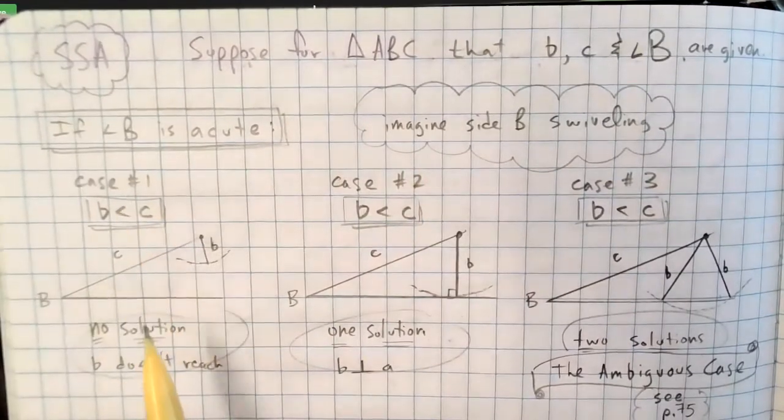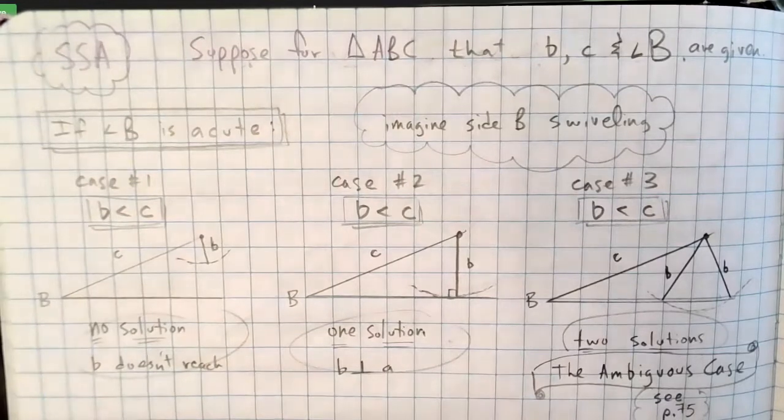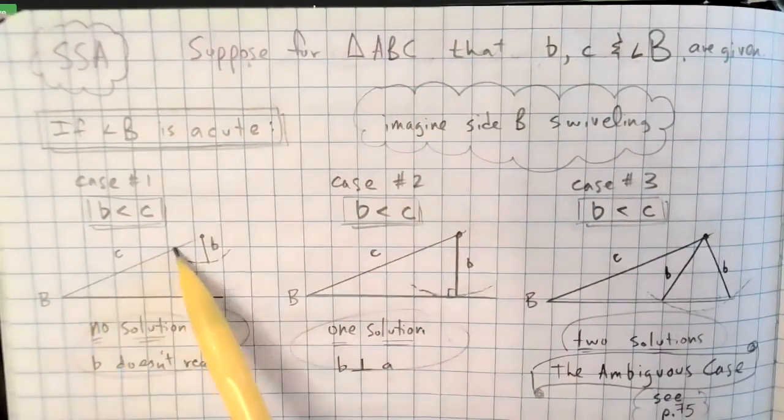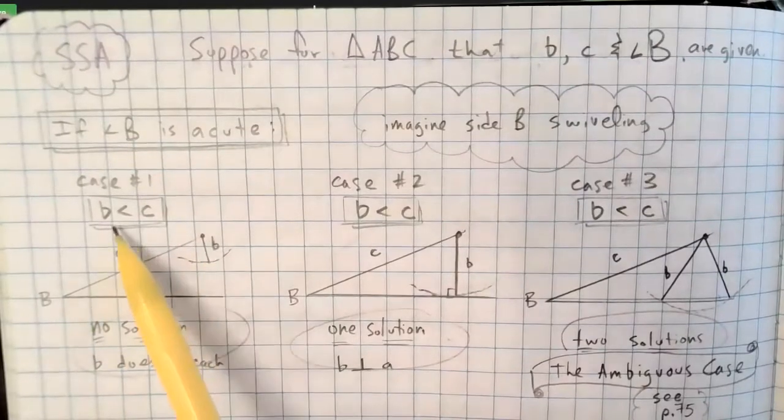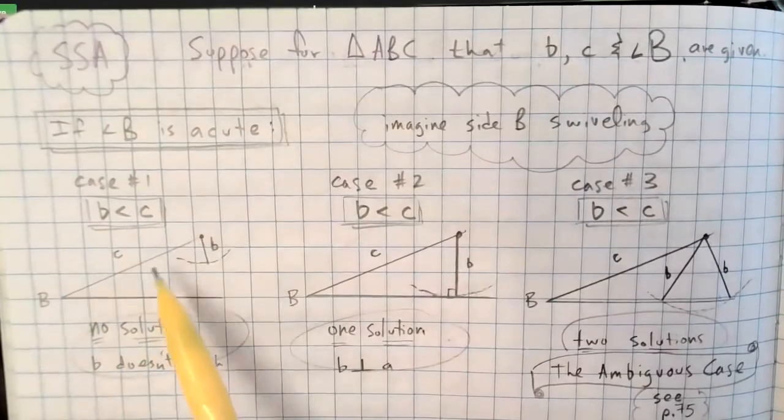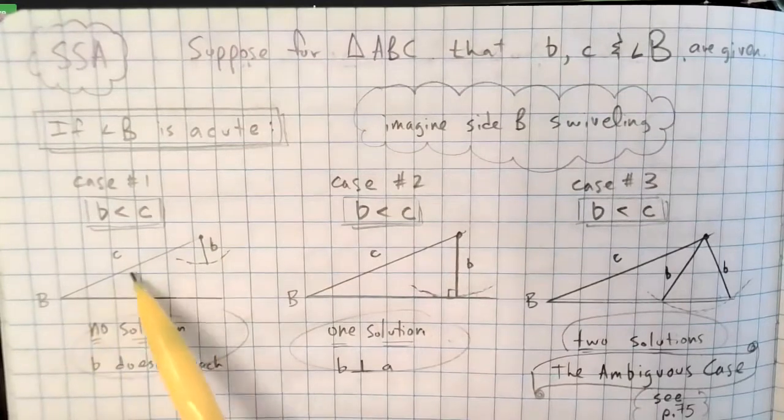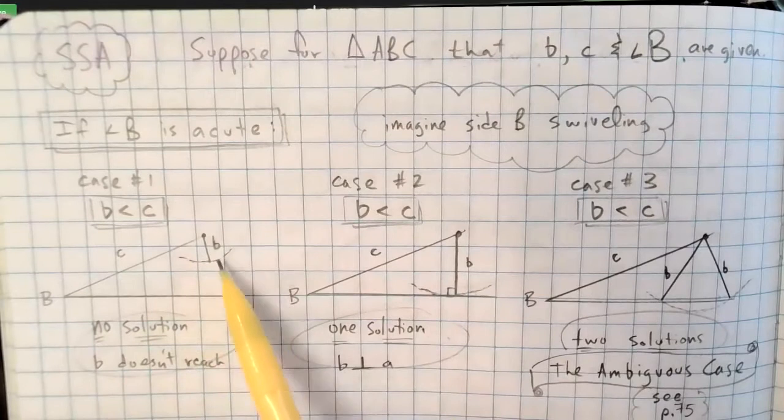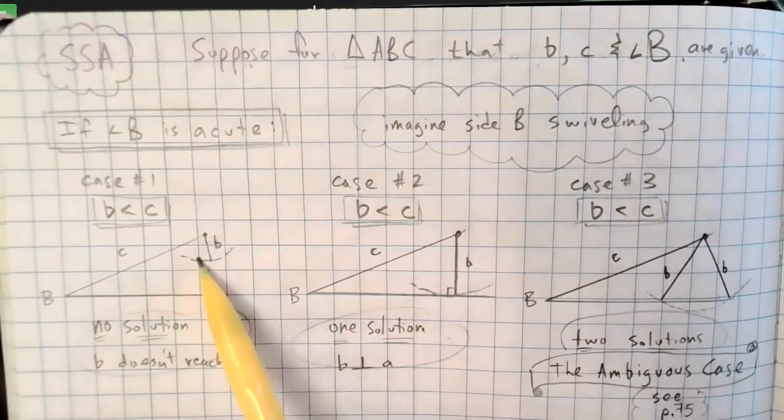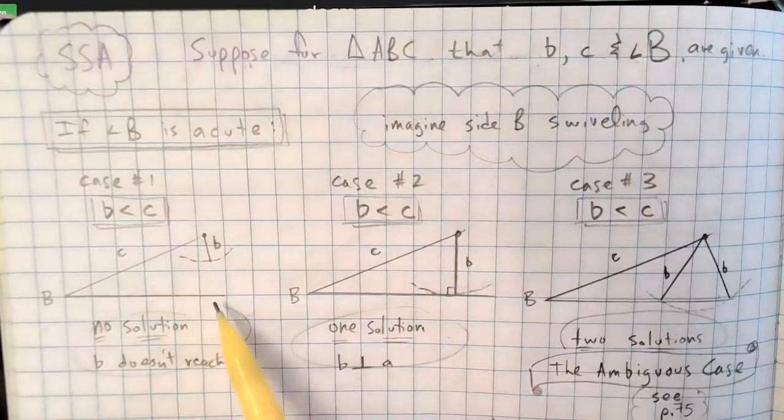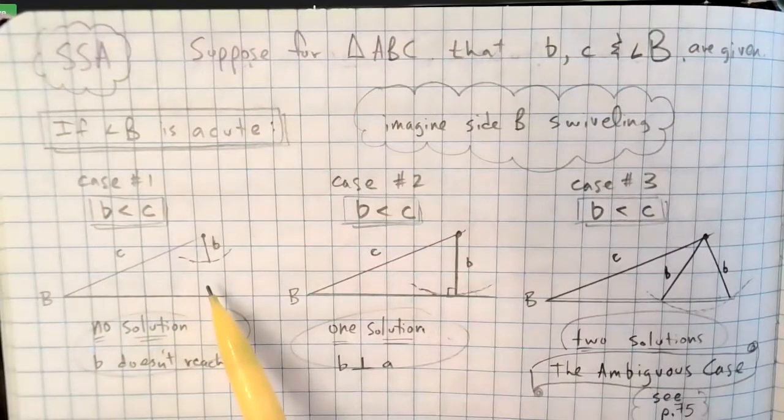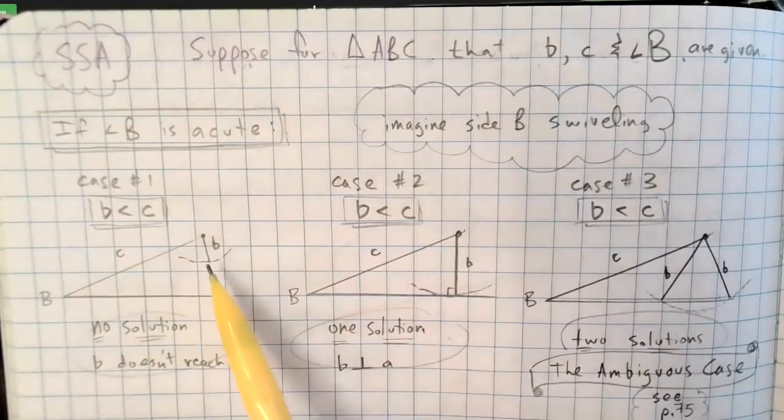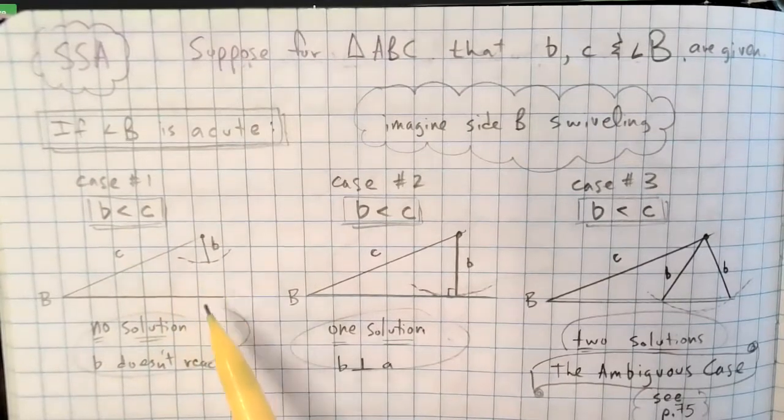For instance, if B is acute, I'm giving you angle B here. And if you have these two sides, these two lengths of the triangle, side c and side b, and we're going to say here that b is less than c. And if you can imagine side c, I'm going to try to make it obviously larger than side b. Side b here, no matter how it swivels back and forth, it can go all these different places. It's not going to hit that third side. This doesn't create a triangle. So if b is less than c, in the case where it doesn't even reach the triangle there, you don't have a triangle. It doesn't work.